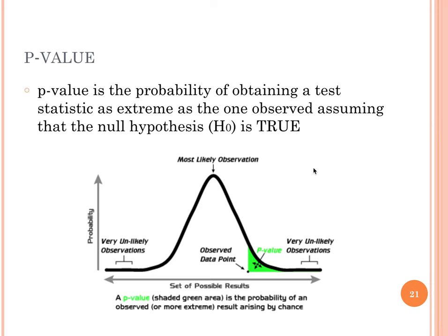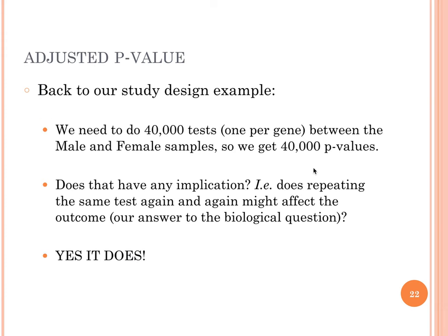An important consideration with p-values: if in our study design we have 40,000 tests to perform, we will get 40,000 p-values. Does performing the same test 40,000 times affect the outcome and the answer we get for our biological question? Of course it does, and that's why we have the concept of adjusted p-values.